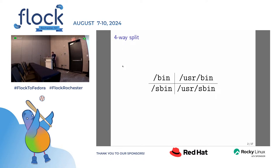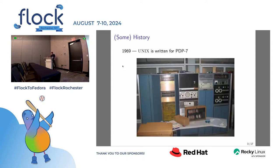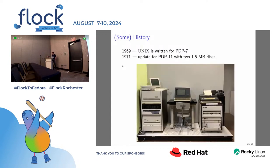The vertical split is still in place and I want to get rid of it. To explain this, I need to talk about the horizontal split too. The story starts in 1969 with the PDP-7 — some magnetic tapes, a nice machine but a bit limited. Unix is written and then gets ported to the PDP-11, which is a huge upgrade with two disks of 1.5 megabytes each.